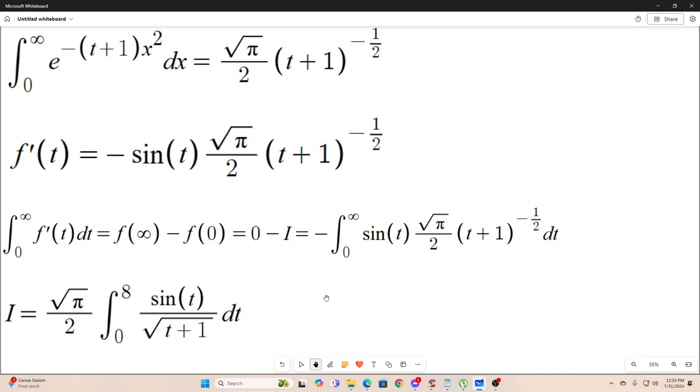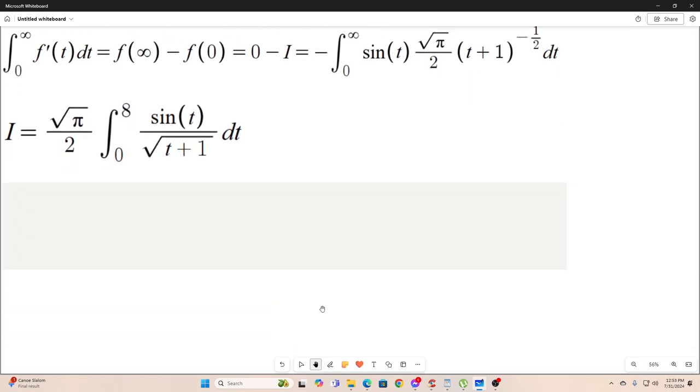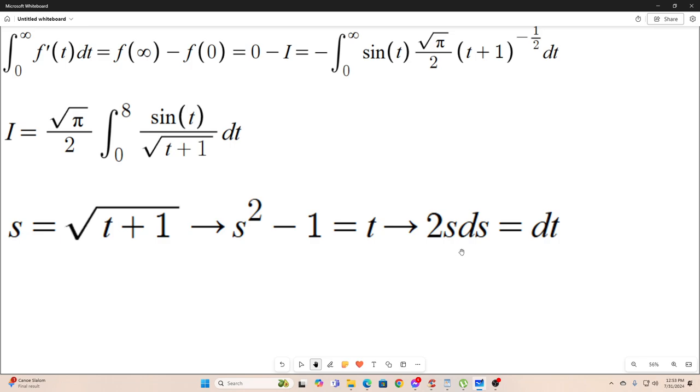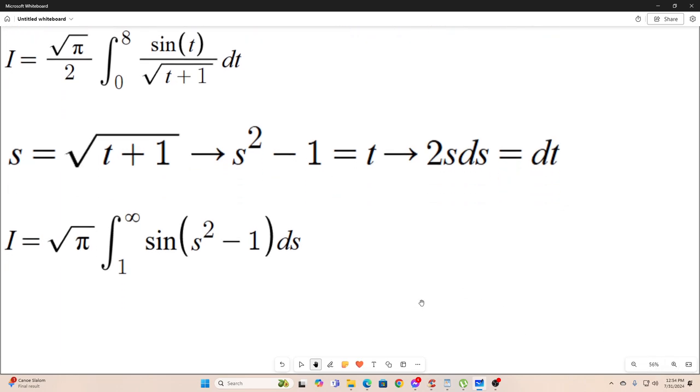Next, we'll make the substitution that s, I picked s for the new variable. Usually I'd pick u if we started with x, but we're starting with t, so I'll go to s. All right. So s is equal to the square root of t plus one. s squared minus one is equal to t, and 2s ds is equal to dt. So performing that substitution, we get the following. Notice that our bounds of integration changed from zero to infinity to one to infinity from that substitution. So that's what we have.